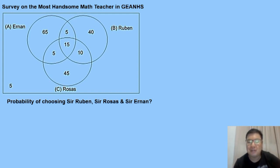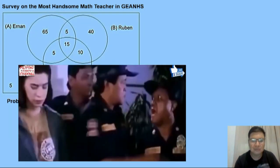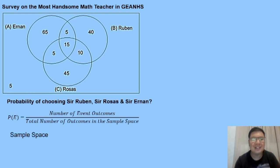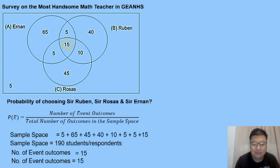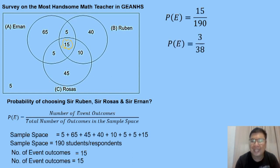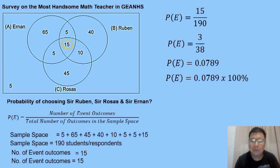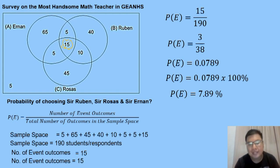Next: probability of choosing Sir Ruben, Sir Rosas, and Sir Ernan — all three. The event outcome is the intersection of all three circles, which is 15. Substituting: 15 over 190, lowest term is 3 over 38. Dividing gives 0.0789, multiplied by 100% gives 7.89% — the probability of choosing Sir Ruben, Sir Rosas, and Sir Ernan.